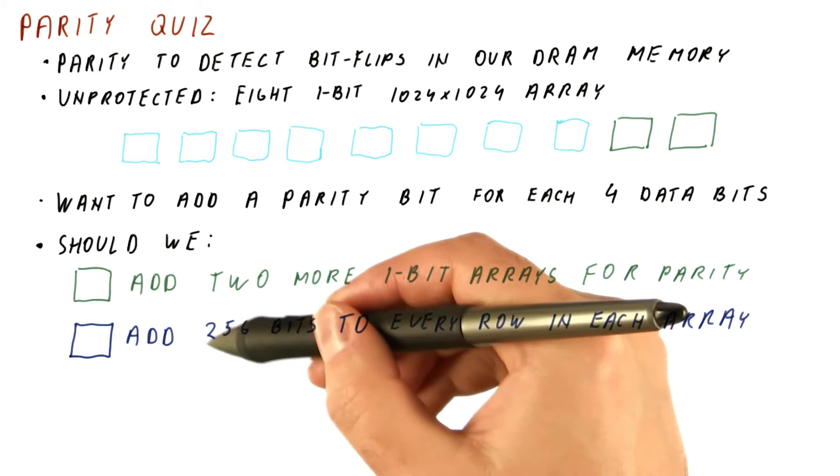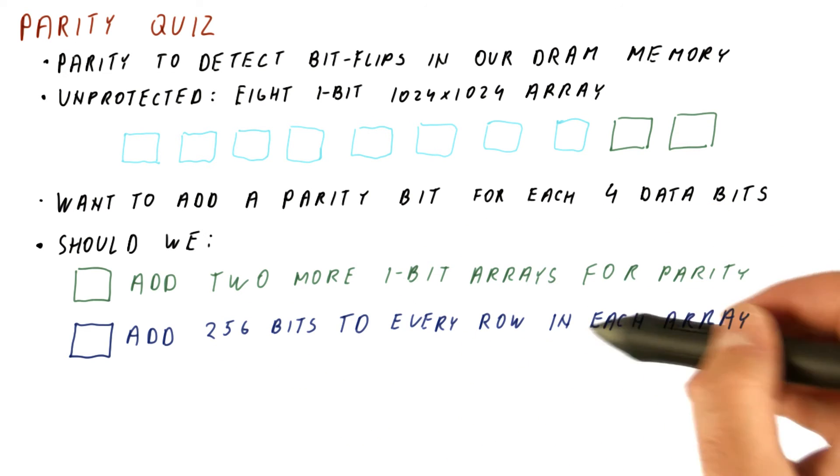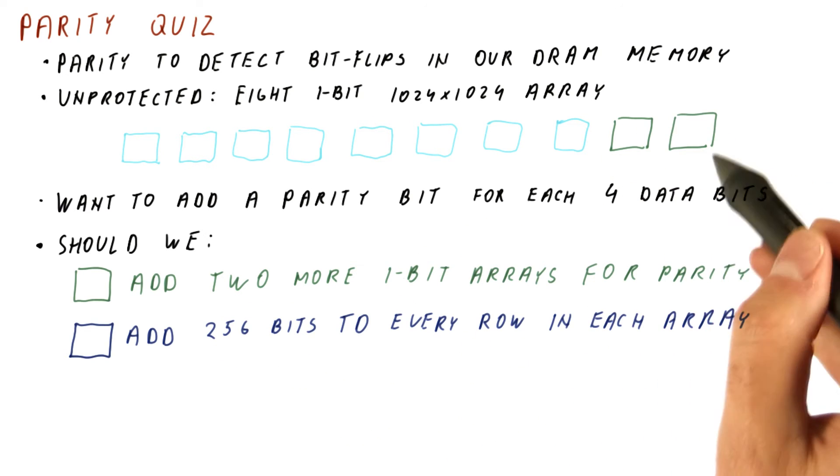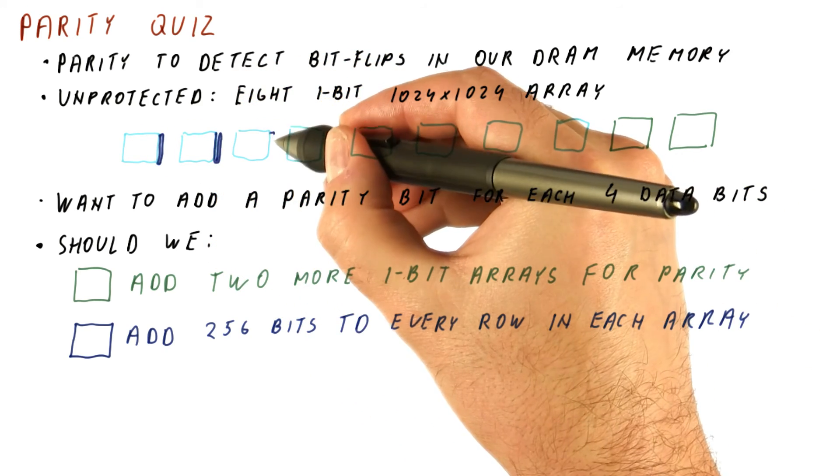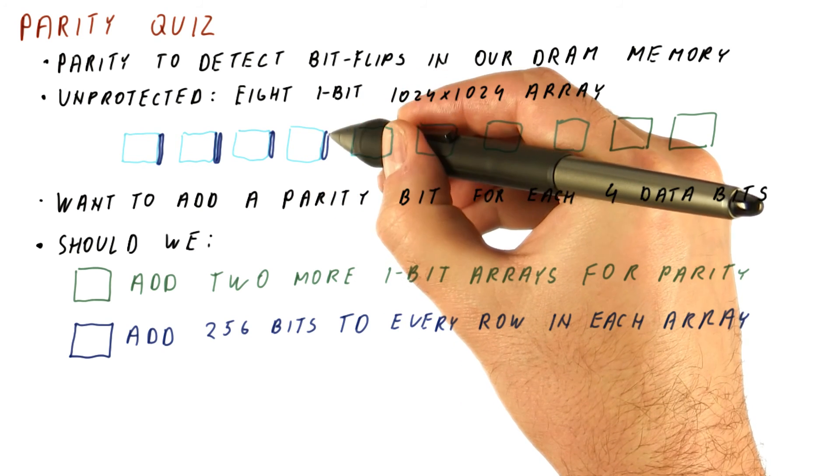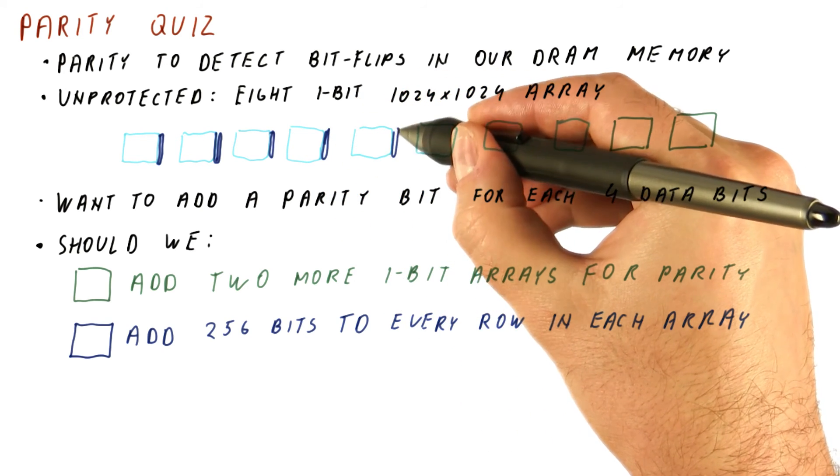Or should we add these additional parity bits to every row in each array so that we don't need the extra modules, but what we do is we extend each of these modules with the extra bits that protect the data in that row.